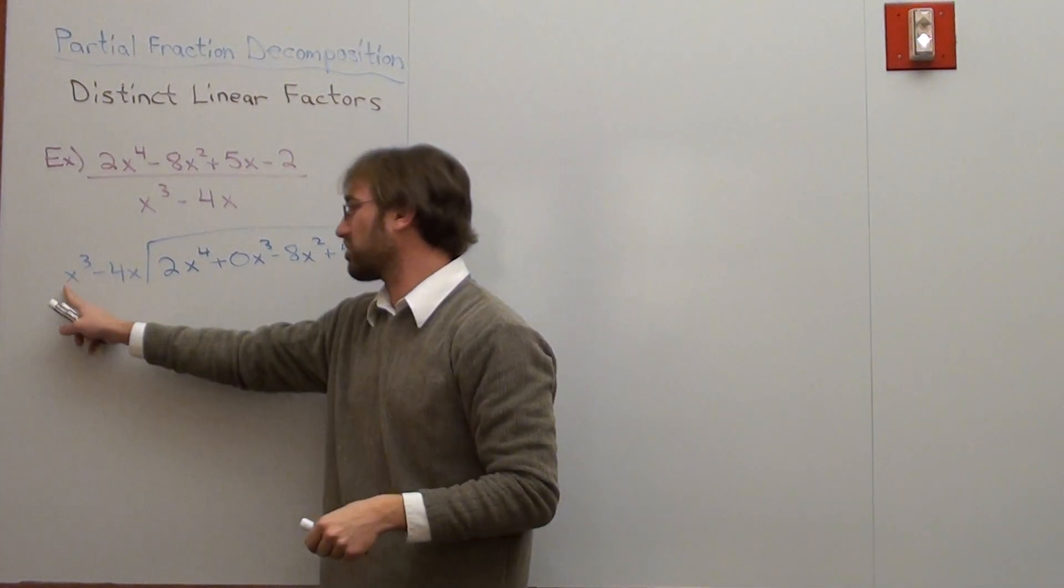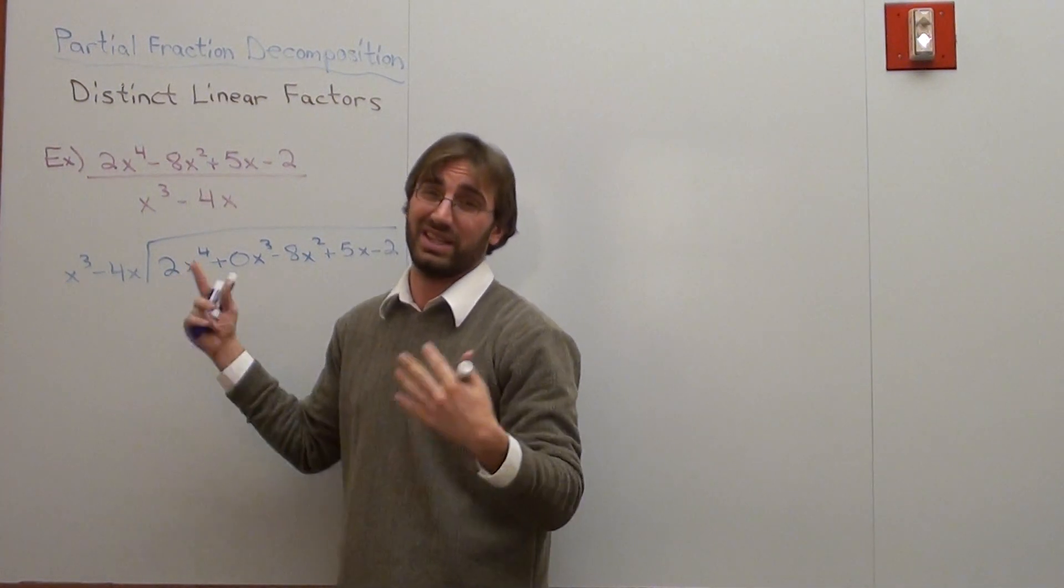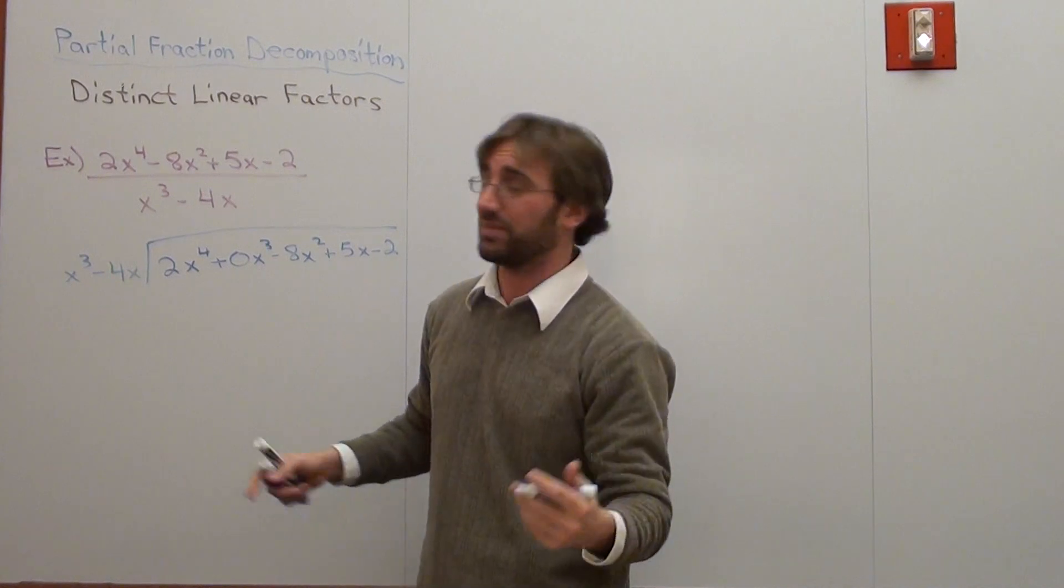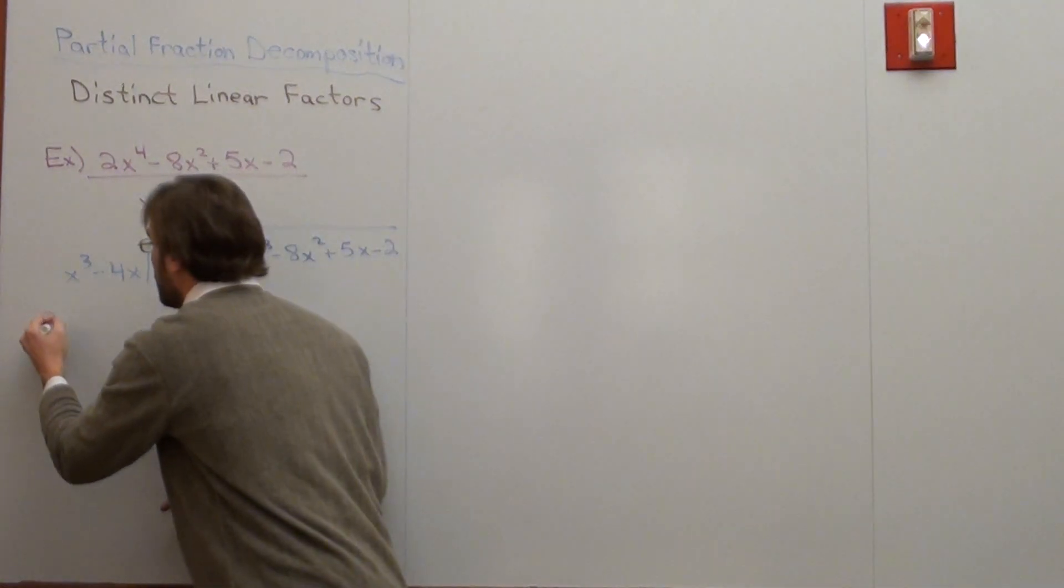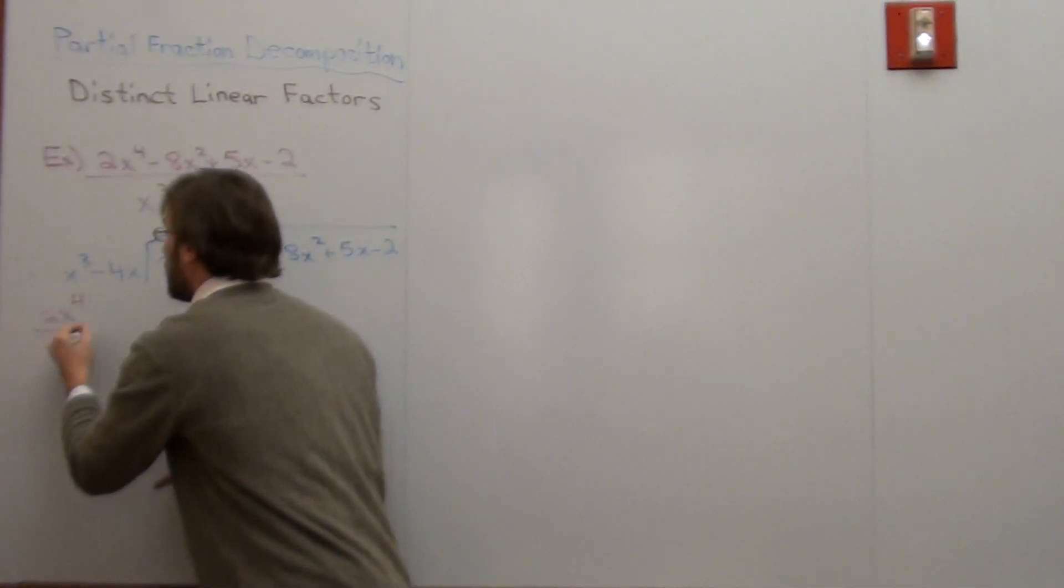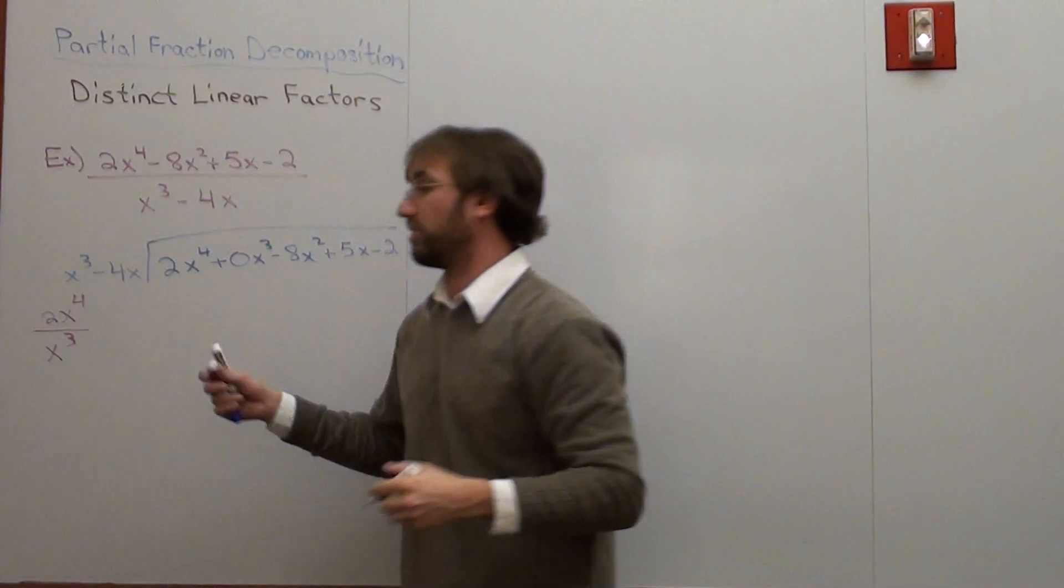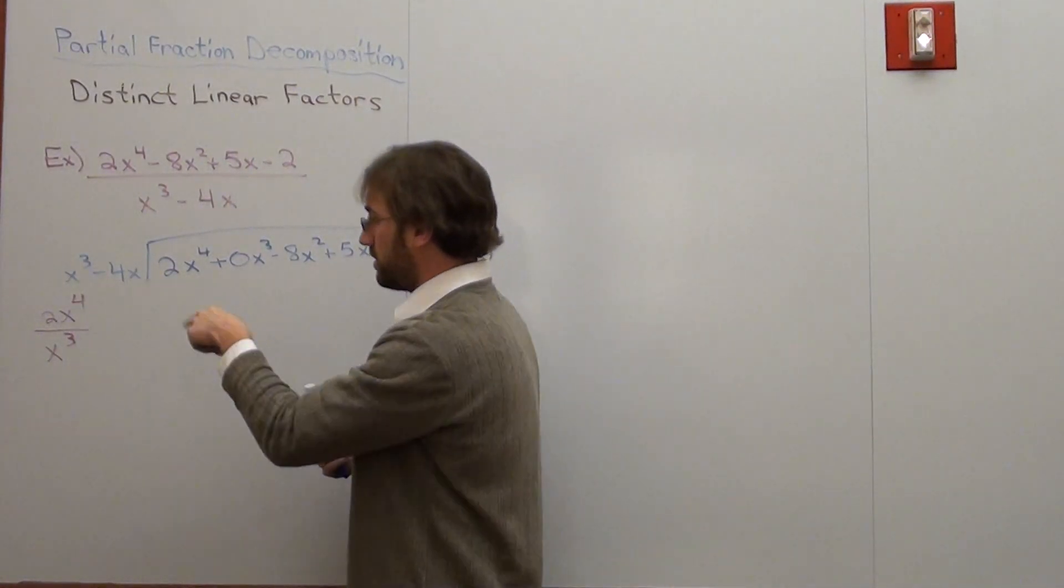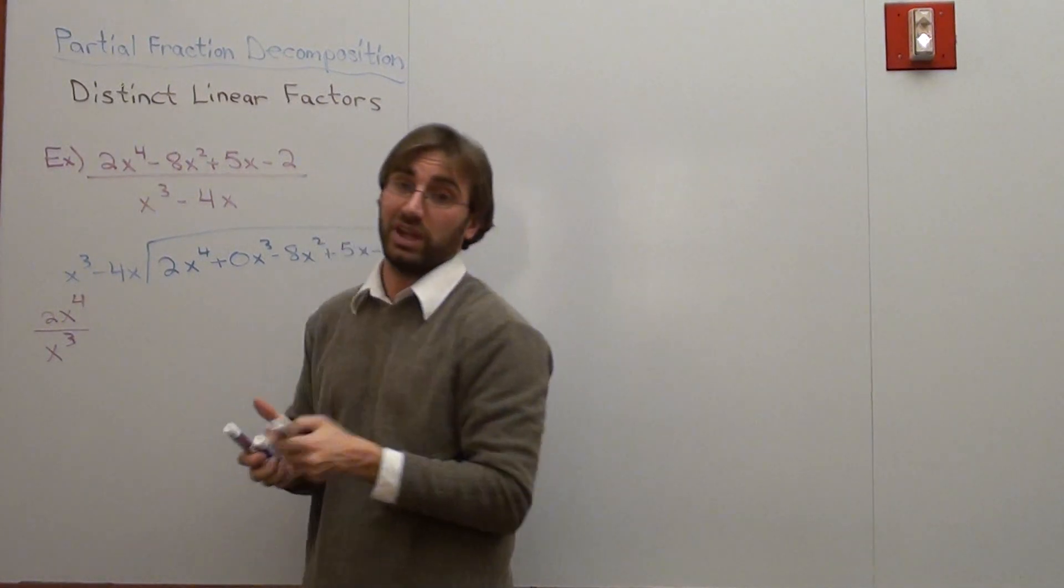Now when I do that, x cubed times what equals 2x to the fourth? Lots of students have trouble with that. So what I tell them is take this term and divide it by this term, x cubed. 2x to the fourth divided by x cubed is 2x. Let me do that in a different color.